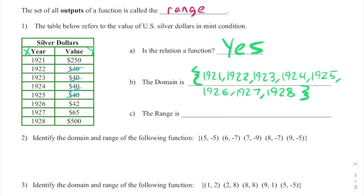I just have to write them once, so I write 40 one time. Now there's a 42, 65, 250, and 500, and there's our range—all of the y's.